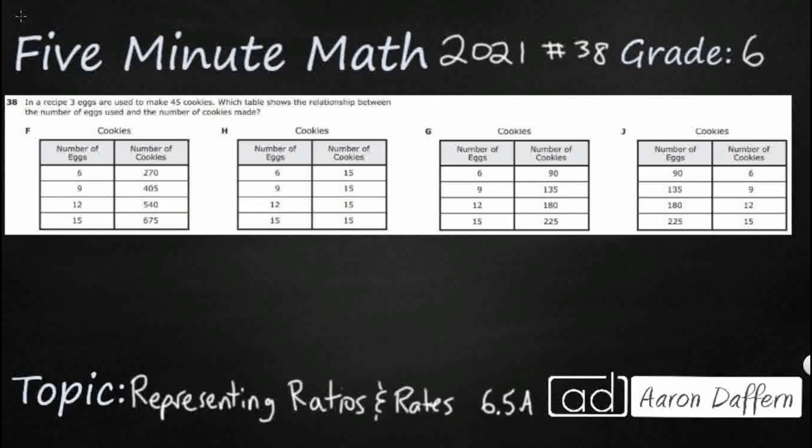So we have a recipe, and we've got 3 eggs used to make 45 cookies. Then I need to have a table showing the relationship between the number of eggs and the number of cookies. So we've got eggs, cookies, eggs, cookies all the way across, and what we're looking for is this ratio 3 to 45.